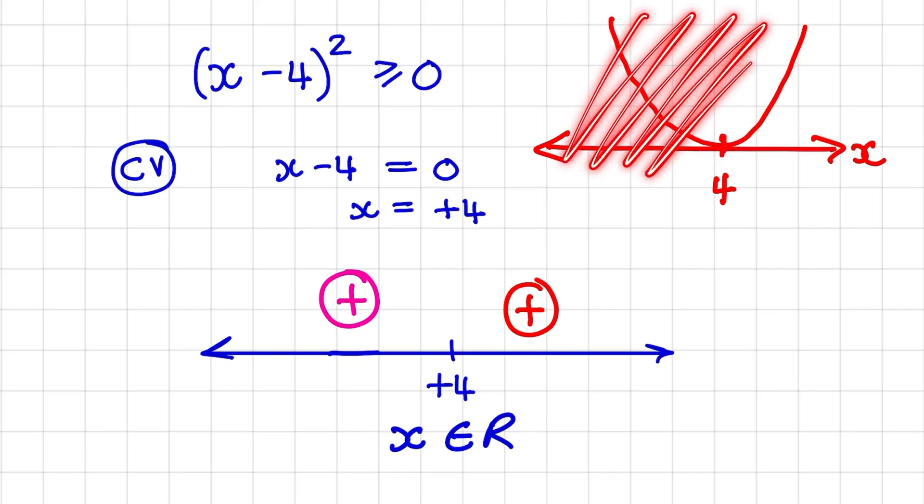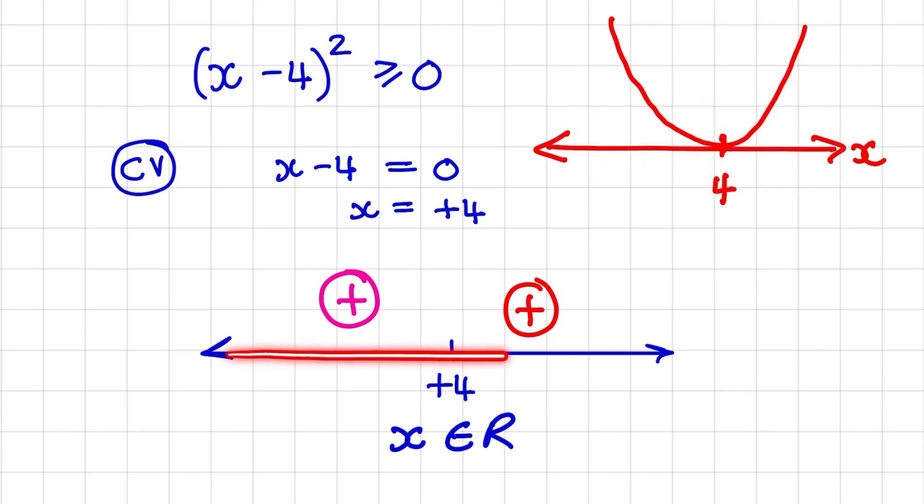Now you do not need to know anything about parabolas in order to interpret this inequality. You can simply substitute values to the right and to the left of your critical value to determine the signs. And then use those signs to interpret the inequality.